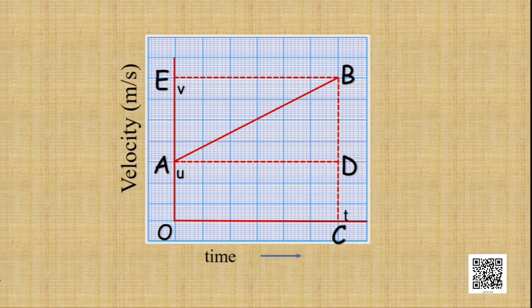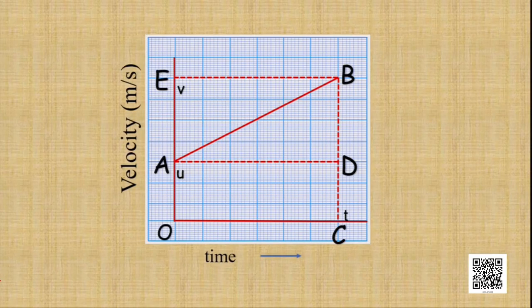In order to find out the distance traveled by the object, we can use the area enclosed within O, A, B, C under the velocity-time graph. O, A, B, C is a trapezium. So to find out the distance traveled by the object when it has accelerated from an initial velocity of U to a final velocity of V in a time duration of T, let us derive that equation from the graph.